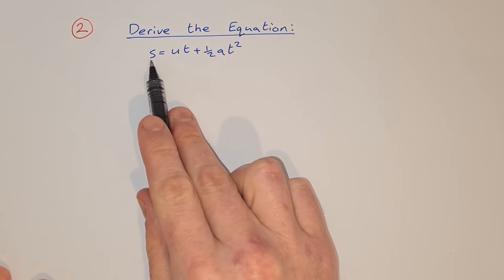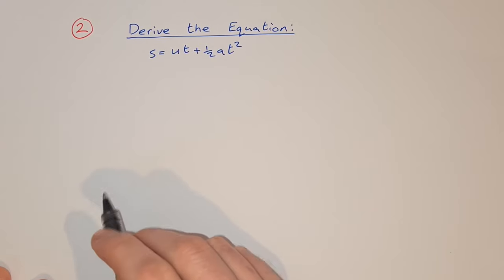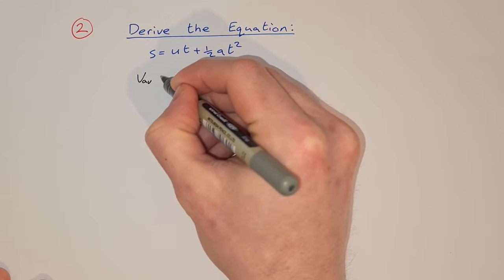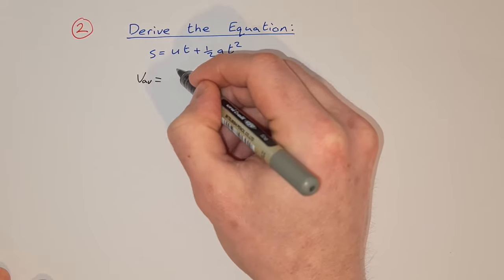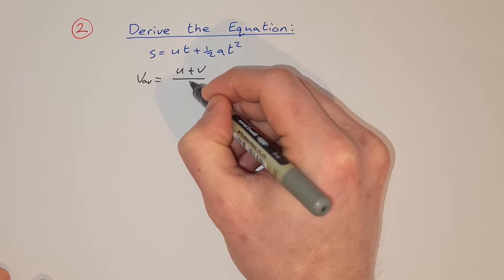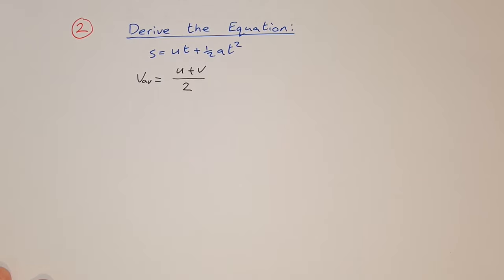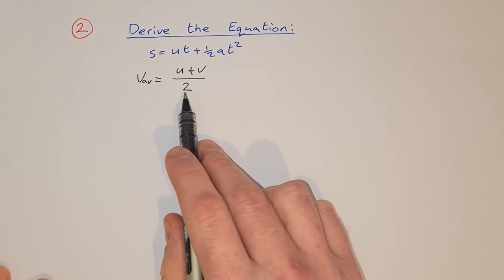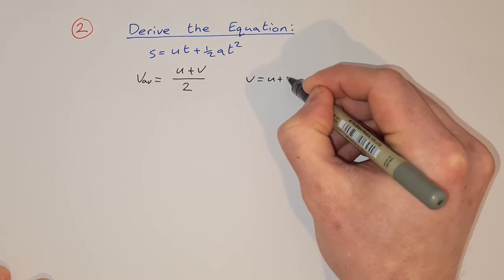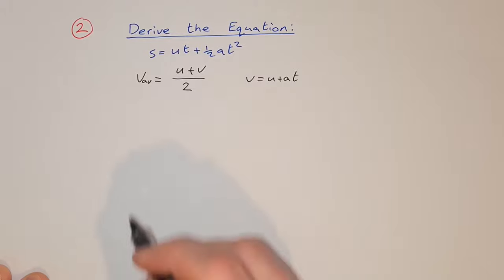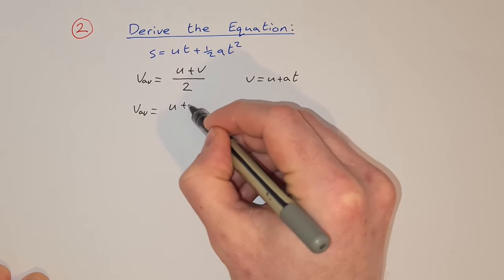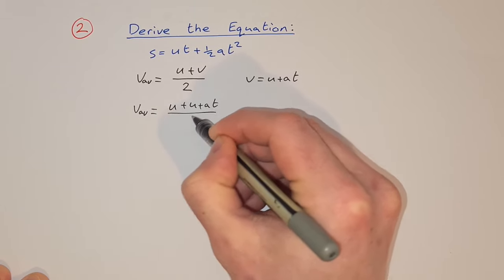Now we're asked to derive the equation s = ut + ½at². To start with this one, we say that average velocity v_avg is equal to the initial velocity u plus the final velocity v, over 2. So v_avg = (u + v)/2. But we know that v = u + at from equation 1, so we can substitute that in and say v_avg = (u + u + at)/2.